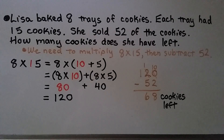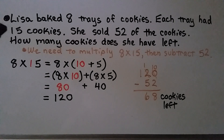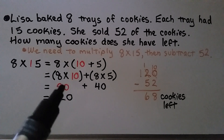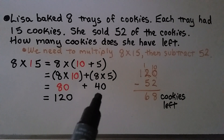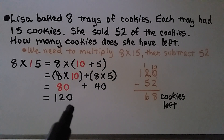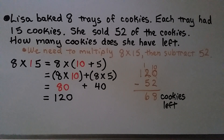Lisa baked 8 trays of cookies, each tray had 15 cookies, and she sold 52 of them. How many does she have left? We multiply 8 times 15: using the distributive property, 8 times 10 is 80 and 8 times 5 is 40. Adding partial products gives 120 cookies total. Then we subtract the 52 she sold: 120 minus 52 equals 68 cookies left.